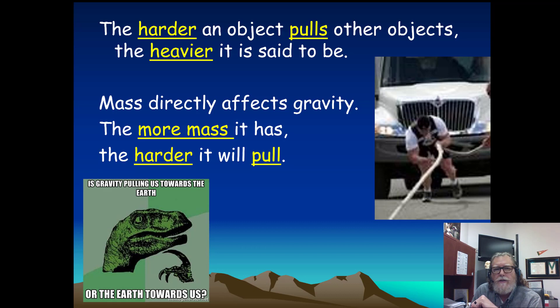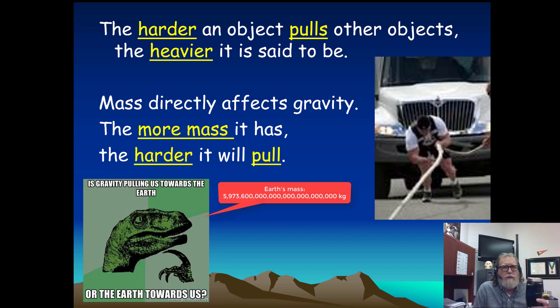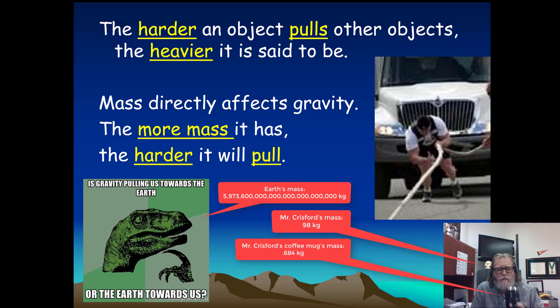So you might say, is gravity pulling us towards the Earth, or are we pulling the Earth towards us? Well, both, actually. It's just that we can't tell that we are having an effect on the Earth because the Earth is so much more massive than we are. I can have an effect on this coffee mug because I'm so much more massive than the coffee mug. Alright, let's move forward.